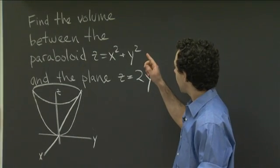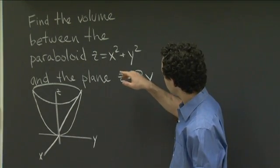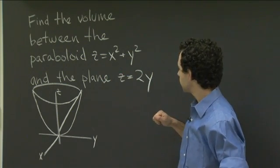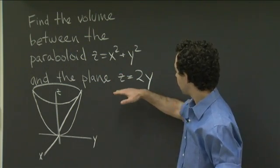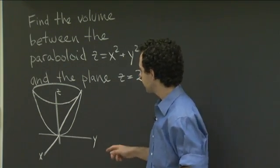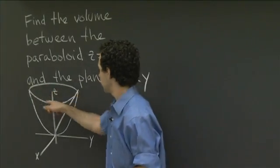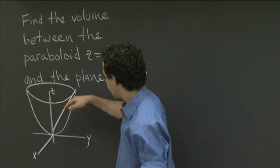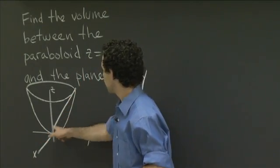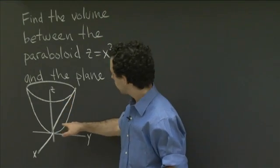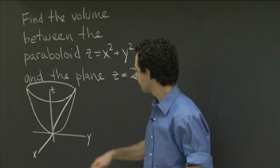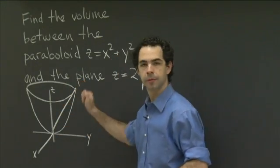So I have a volume, and I'm describing it to you. It's the volume inside the paraboloid z equals x squared plus y squared and bounded by the plane z equals 2y. So I've drawn a little picture here. This is the paraboloid, and we're taking a plane cut of it, slicing off some chunk. What I want to know is the volume of that piece cut off by that plane — below the plane and above the paraboloid.